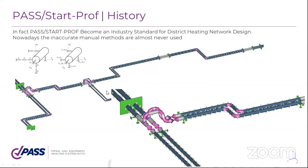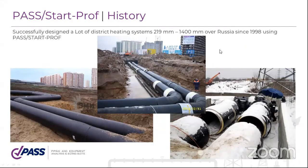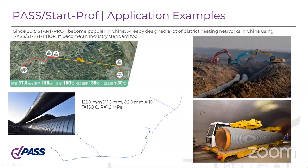Here is an example of a district heating network in PassStatProf software. The soil is modeled using special soil springs. Here is an underground chamber with the intersection of pipelines and valves. There are a lot of district heating projects in Russia, with diameters from about 200 millimeters to 1.4 meters. Almost all district heating networks in Russia, Kazakhstan, Ukraine, and Belarus are now designed using StarProf software. Since 2015, China joined the community of StarProf users.